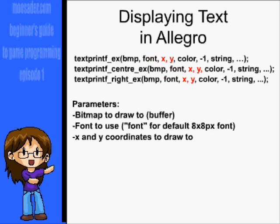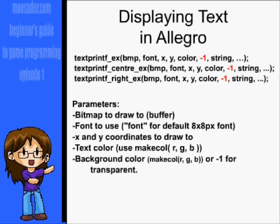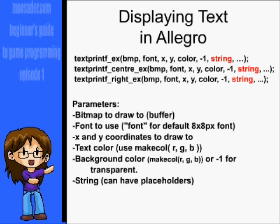The x and y coordinates. The text color, for which you'll use the make_color function. The background color, which you can also use the make_color function for, or use negative 1 for invisible. And your string, and then any placeholder parameters.